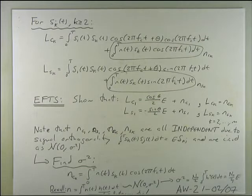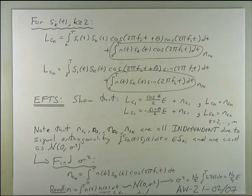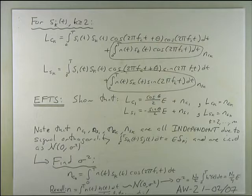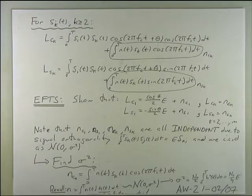The lc1 and ls1 case will have a DC term, which is expected. Because of the orthogonality principle, s1, s2, s3 are all orthogonal to each other. s1 correlated with s1 gives us the energy of the signal; s1 correlated with any other signal is zero. That's where we get these lc and ls terms, and you're encouraged to derive that.